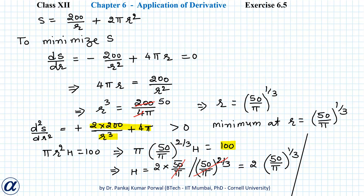So the right circular cylindrical can with volume 100 cubic centimeters will have minimum surface area when r = (50/π)^(1/3) and h = 2 × (50/π)^(1/3).